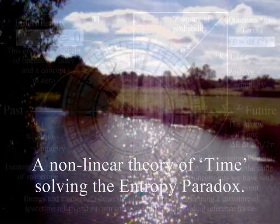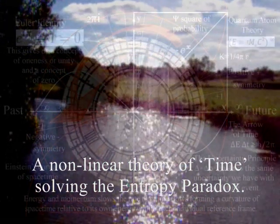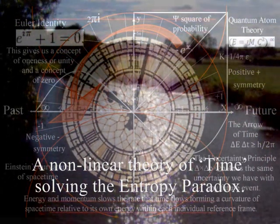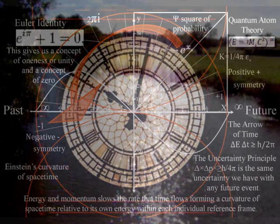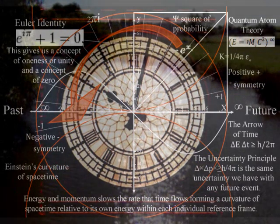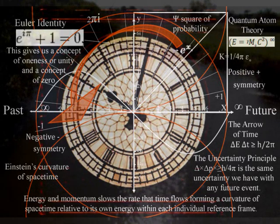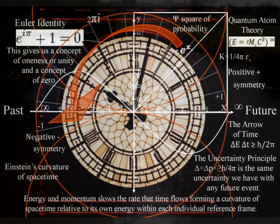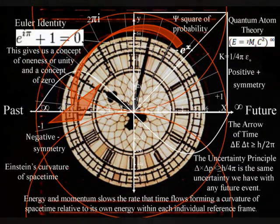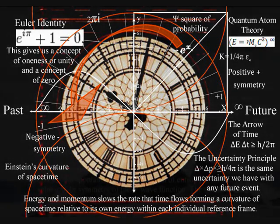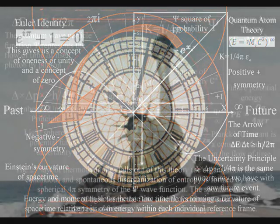The second law of thermodynamics is a pillar of modern physics. It is tied to the flow of time and the unfolding of events. It says that heat travels from hot to cold bodies and not the other way around, because heat is a measure of disorder or entropy. Disorder or entropy will always increase for an isolated system or reference frame.